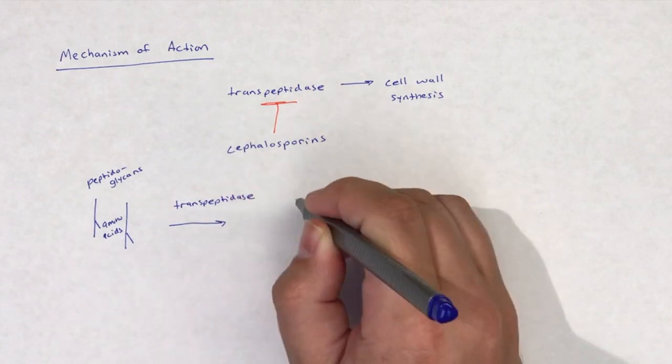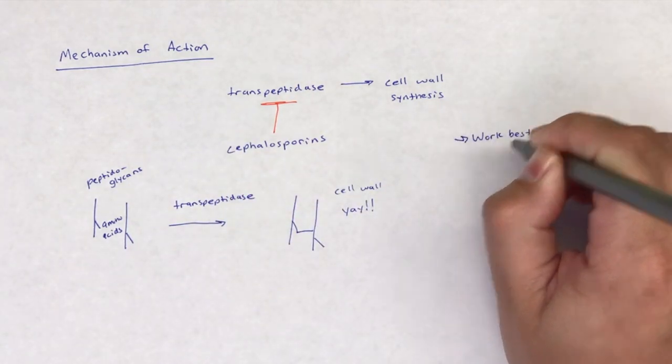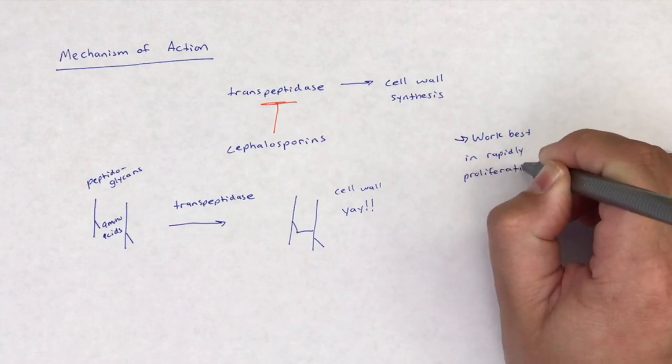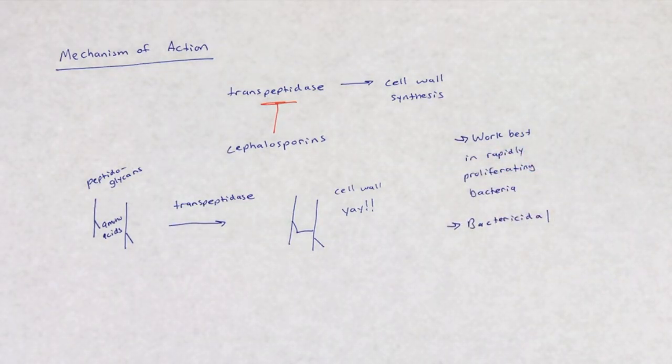Cephalosporins do this by binding to and inhibiting transpeptidase. Cephalosporins work best in rapidly proliferating bacteria. Furthermore, cephalosporins are bactericidal.